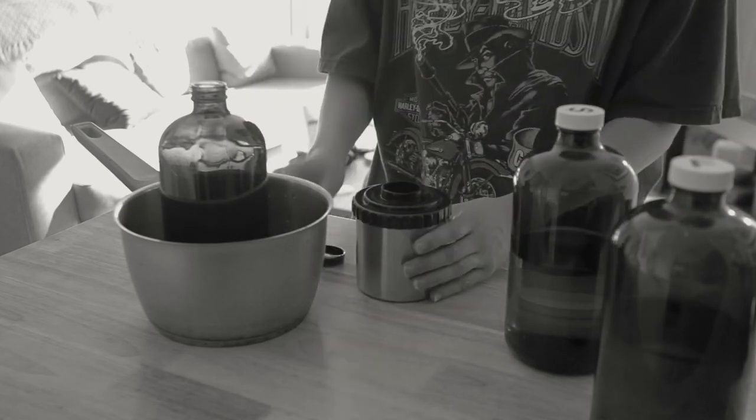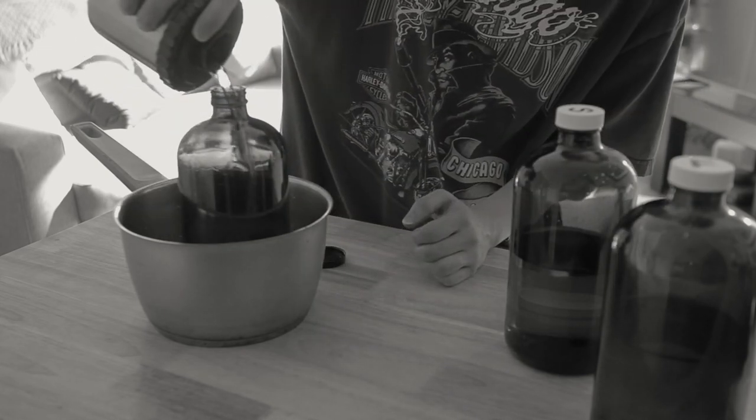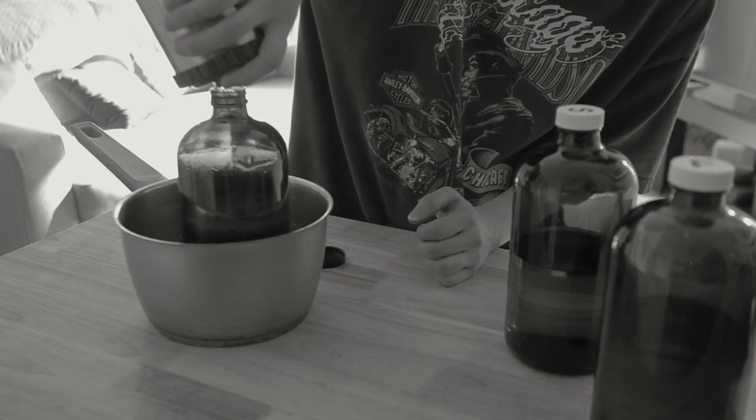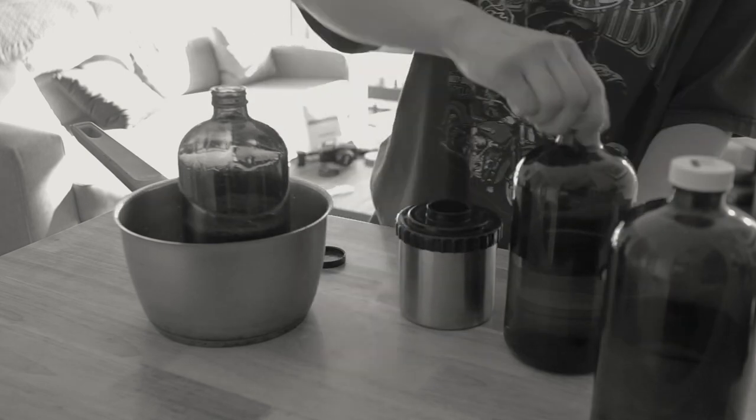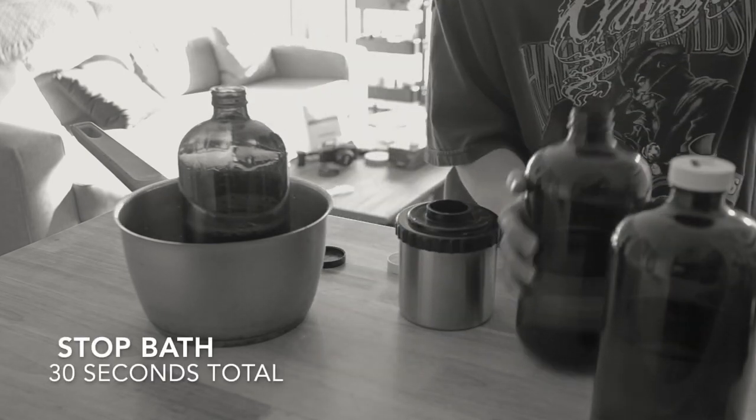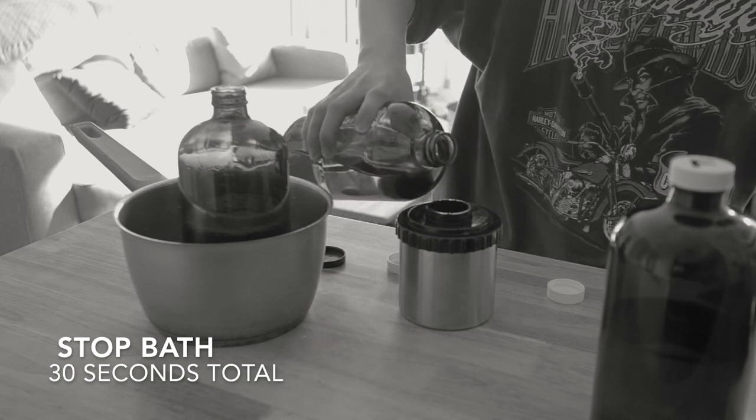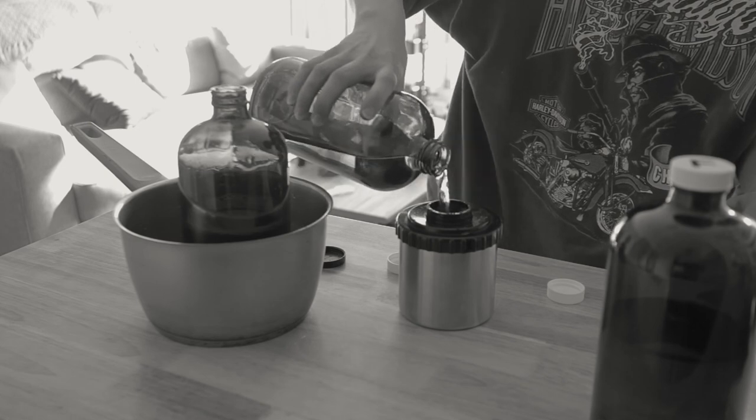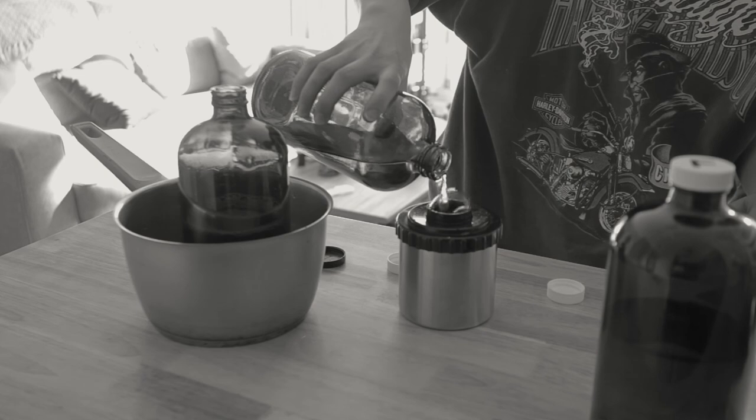All right so the next step is the stop bath and as I mentioned before that's to stop the development process. And you only need to do this for 30 seconds. So I'm starting my timer now. And you'll agitate for the full 30 seconds. Again try to pour this as quick as possible because every second counts.